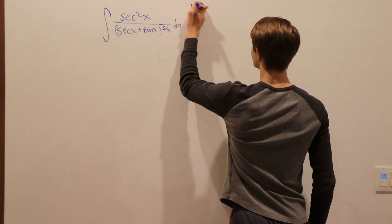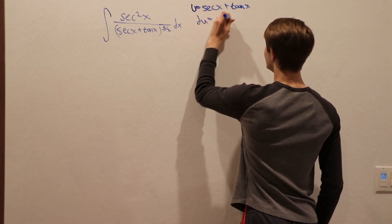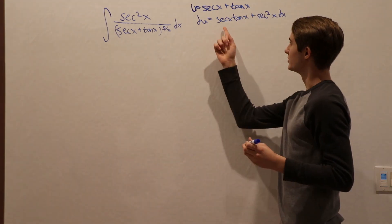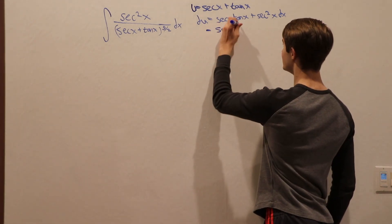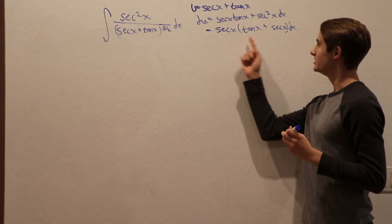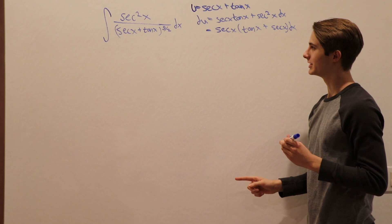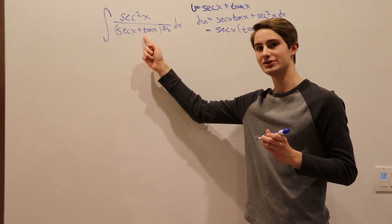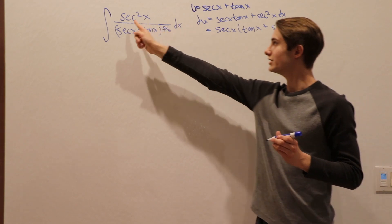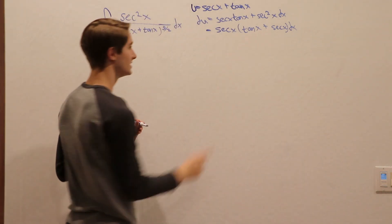Let u equal secant x plus tangent x. Then du is going to be secant x tangent x plus secant squared x. We can see there's a common factor of secant x, so we break this up into secant x times tangent x plus secant x. And immediately I notice tangent x plus secant x — that's exactly what we substituted in the first place. We also have a 9 halves power of secant x plus tangent x on the bottom, and a factor of secant x that happens to be squared.